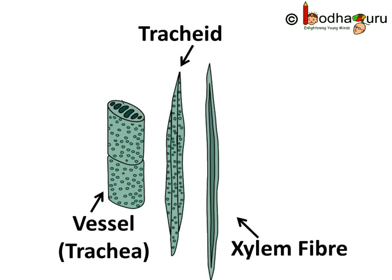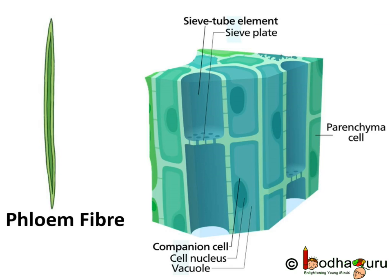Tracheids and vessels are tubular structures, which allows them to transport water and minerals vertically. Remember, a vessel is also known as trachea, and the plural of trachea is tracheae. Xylem fibers are mainly supportive in function.